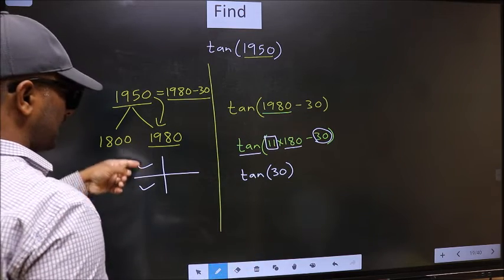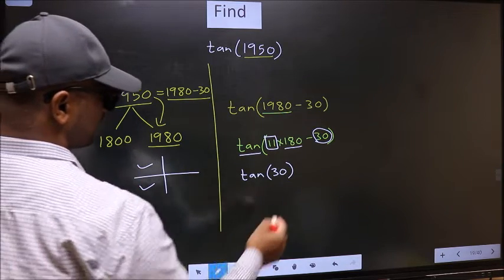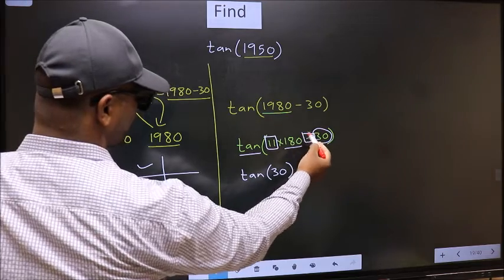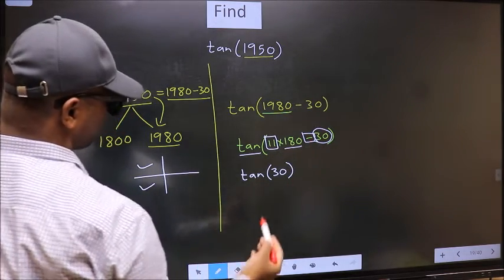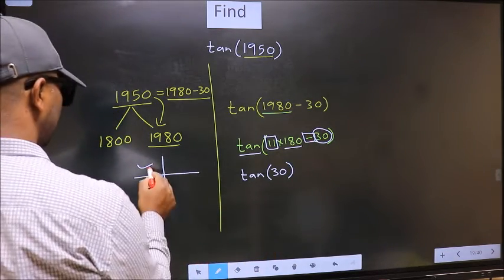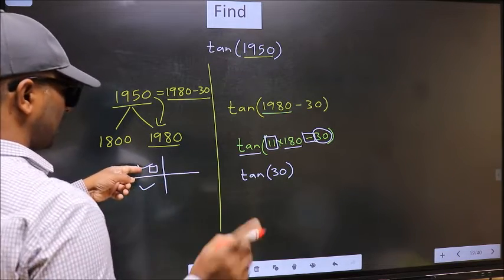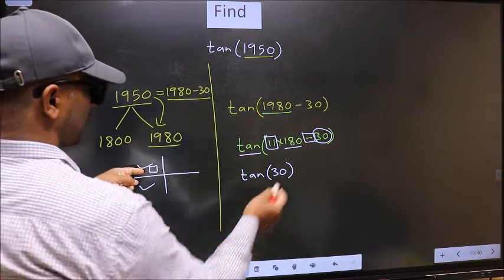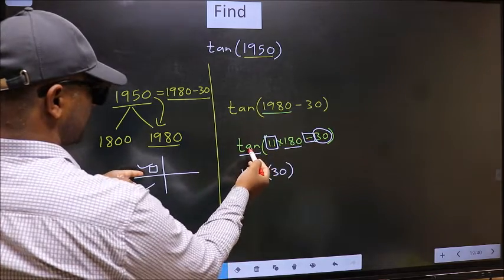So now to select the quadrant, we should look at this symbol. Here we have negative. That means the angle lies in the second quadrant. And in the second quadrant, tan is negative.